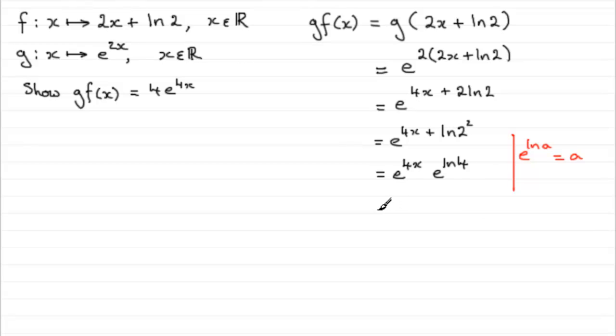So we've got e to the 4x then, multiplied by 4, which is exactly what we wanted. Only I'm just going to write it in the right order: 4e to the power 4x then, okay.